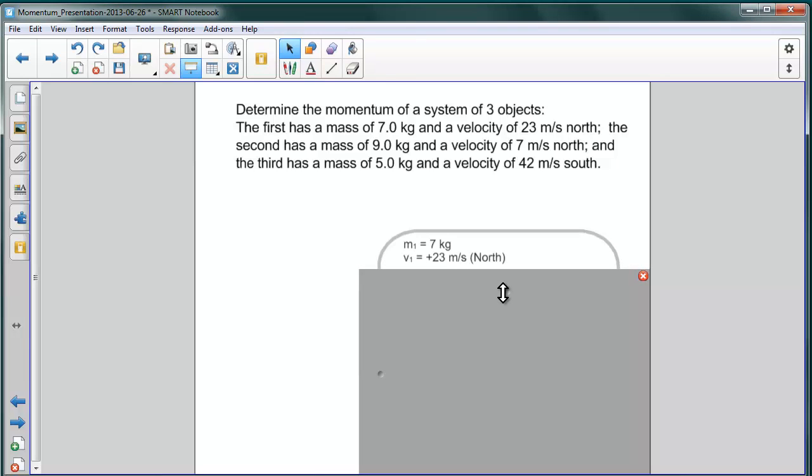Recall, we define north as a positive direction. The second has a mass of 9 kg and a velocity of 7 m/s to the north. Again, positive direction.